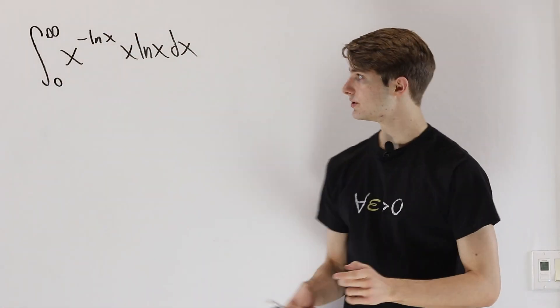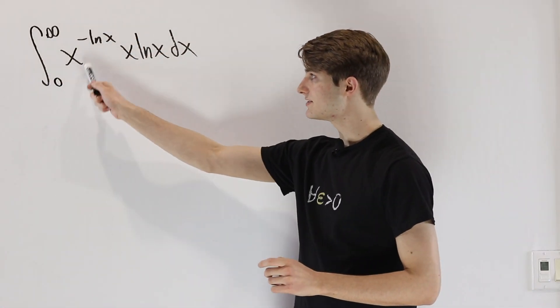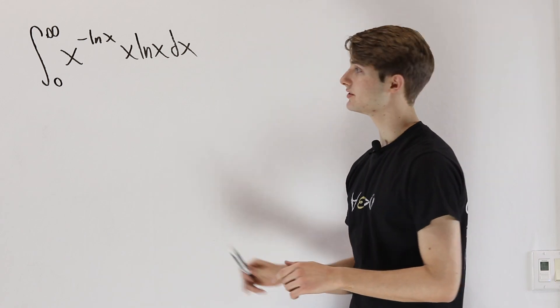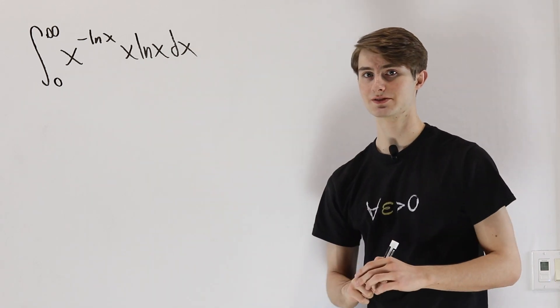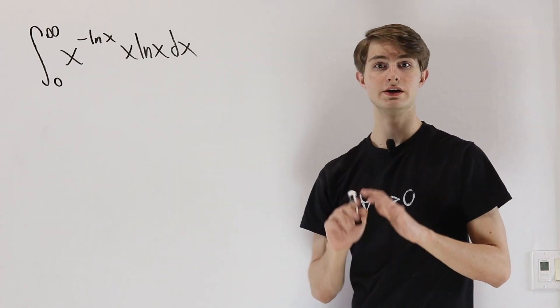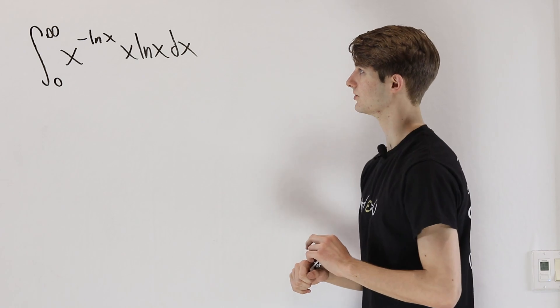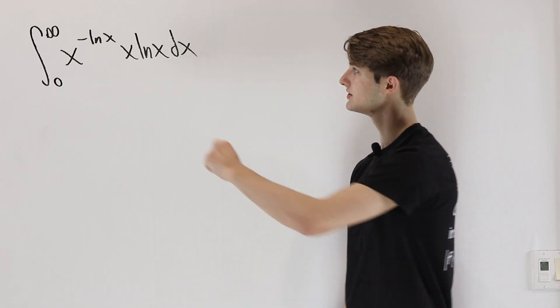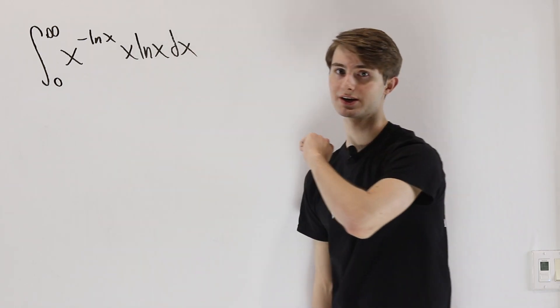We are going to do the integral from 0 to infinity of x to the negative natural log x, times x natural log x dx. Notice that everything in this integral is written in terms of two things: x and natural log x.